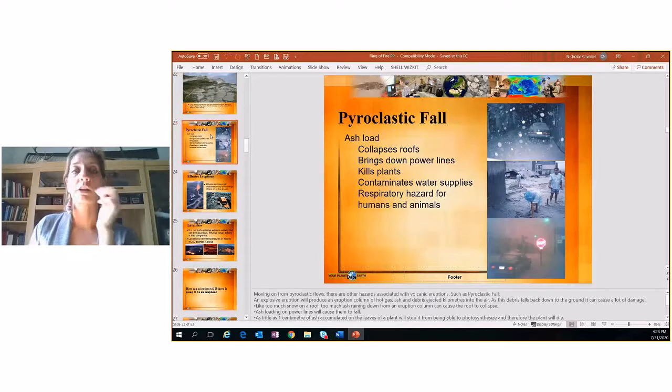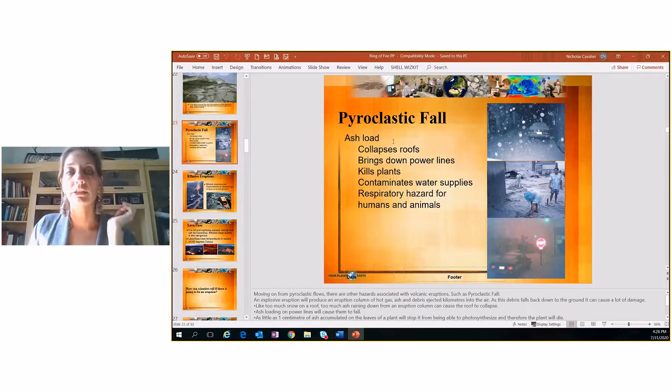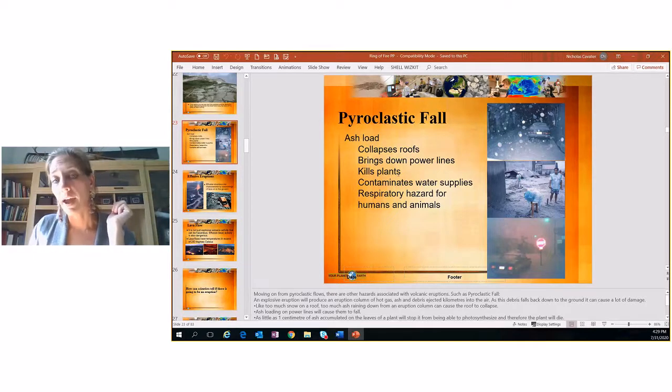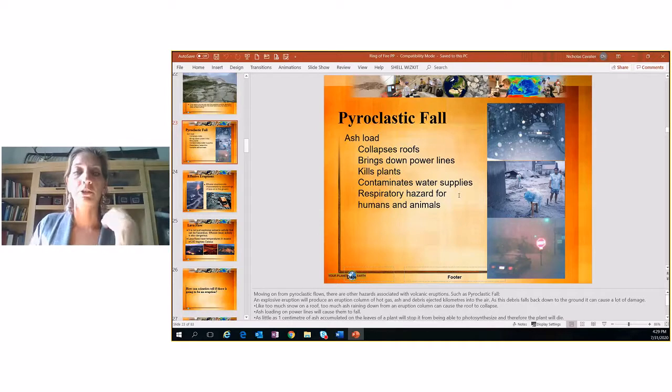Pyroclastic fall. So ash load, the ashes that fall. This is not snow. It looks like snow, not snow. It's ashes actually from the eruption. It can cause roofs to collapse. Power lines to be destroyed. Kills plants. We talked about like trees and things like that contaminates water supplies. So you can't drink the water for a while. Respiratory hazard, which is like breathing issues for humans and animals. You can't breathe in that ash and dust.